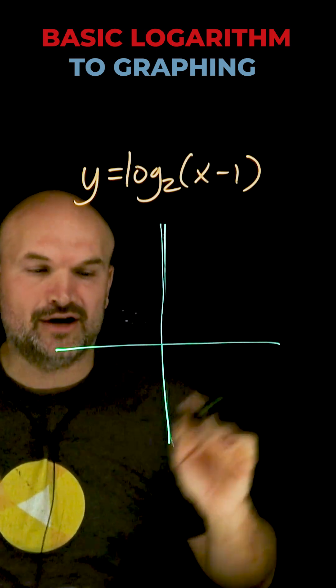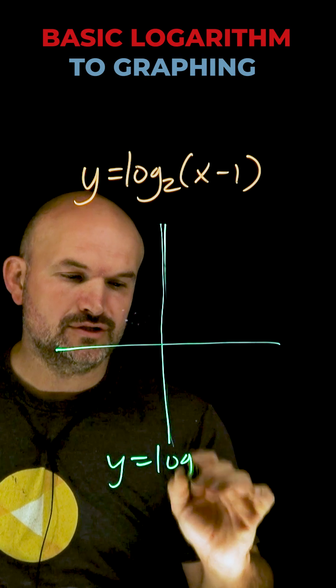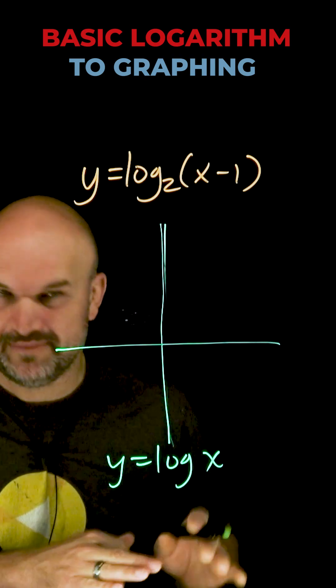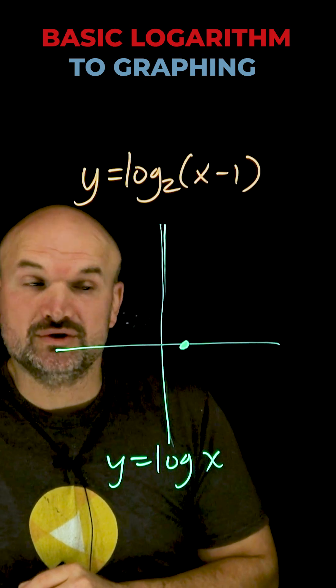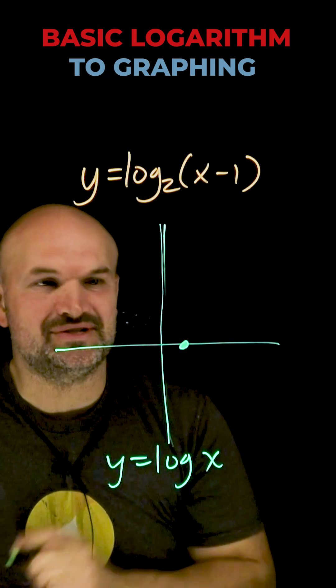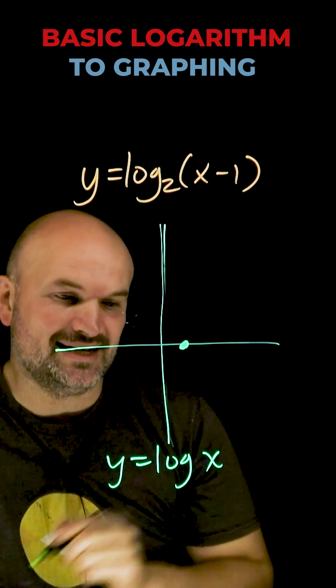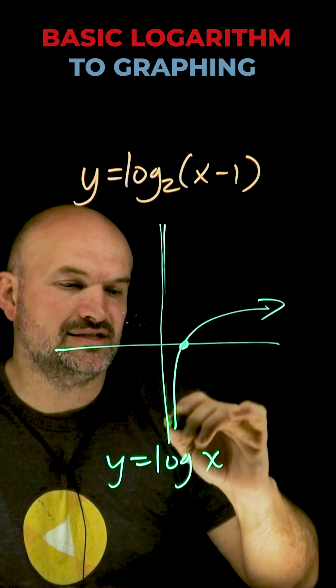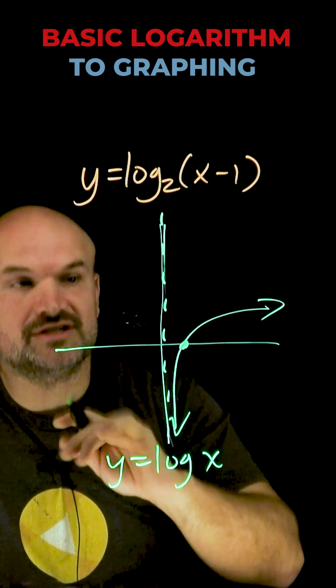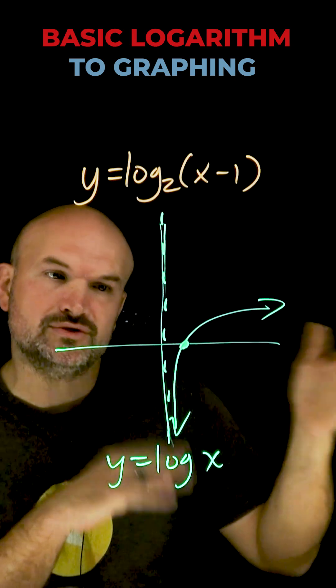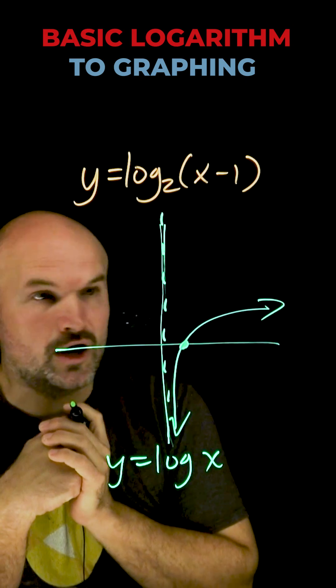If we take a parent graph of y equals log of x, it doesn't really matter what the base is. All these logarithmic functions are going to have an x-intercept at (1, 0) and a vertical asymptote at x equals 0. So the graph is going to look something like this. The domain is all positive numbers from 0 to infinity, and the range is all real numbers.